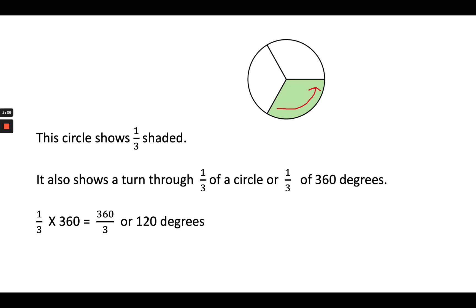In order to determine the angle measure, we would have to multiply one-third by 360 to get 120 degrees. So this green shaded area has an angle measure of 120 degrees, making it an obtuse angle.